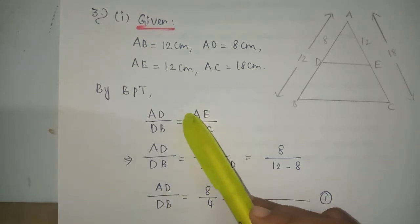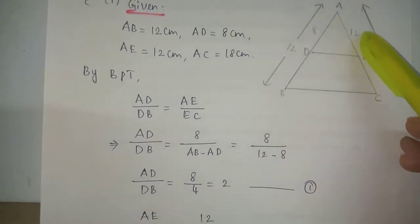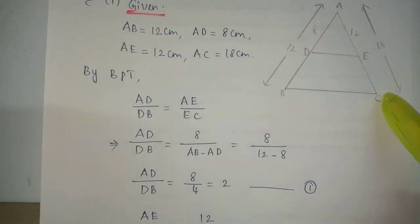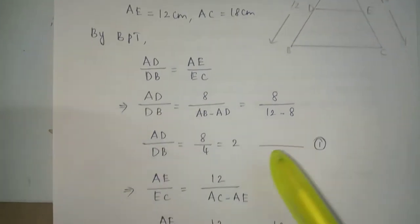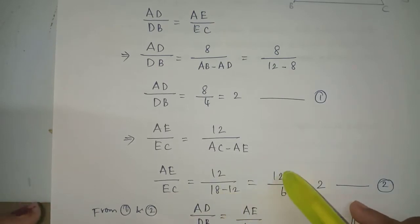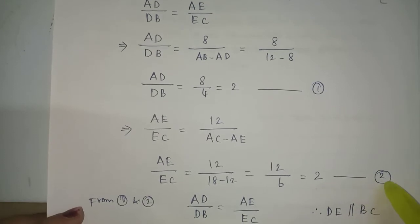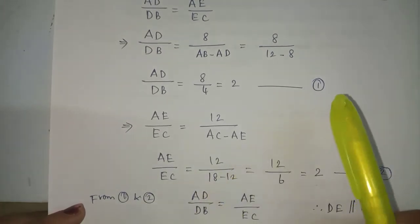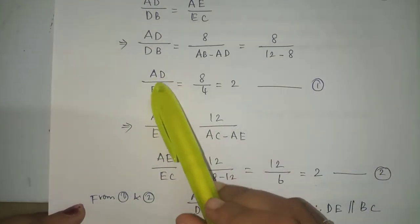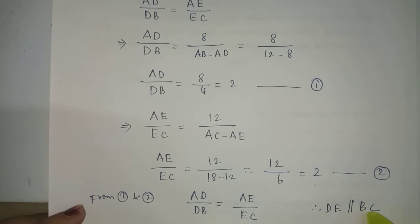Now taking AE by EC: AE is 12 and EC is AC minus AE which is 18 minus 12 equals 6. So AE by EC equals 12 by 6 equals 2. From both results, AD by DB and AE by EC are both equal to 2. Therefore DE is parallel to BC.